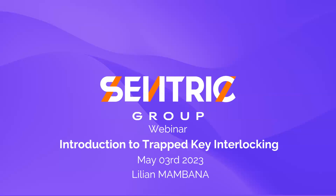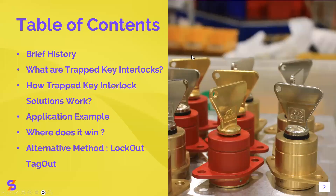So what we are going to cover — the table of contents: I'm going to start with a brief history of trap key interlocks, where it all started. I'm going to present what they are, how they work, show you an application example, the fields where it applies, and finally I'm going to present an alternative method, which is lockout tagout.